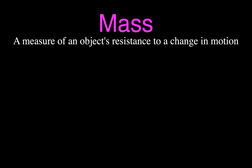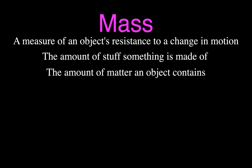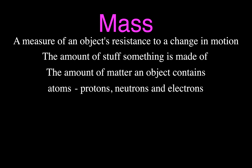What is mass? Mass is simply a measure of an object's resistance to change in motion — that's the textbook definition, and it has to do with inertia. Resistance to change in motion is inertia. For a better explanation, we might say it's the amount of matter that an object contains, and all that matter is made of atoms: protons, neutrons, and electrons.